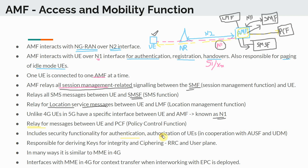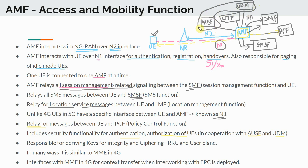AMF includes security functionality for authentication and authorization of UEs in cooperation with the AUSF — the Authentication Server Function — and the UDM, the Unified Data Management. Both the AUSF and UDM are connected to the AMF and are used primarily for authentication. The AMF works in cooperation with these two network functions to authenticate a subscriber.